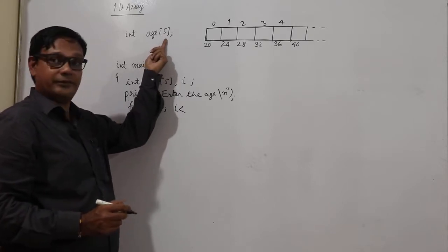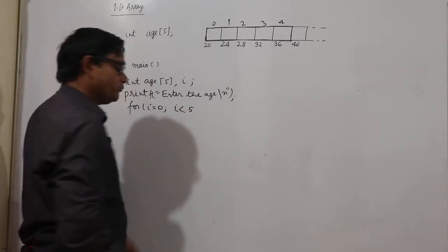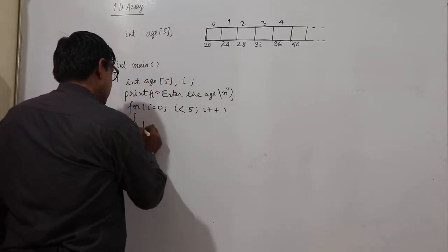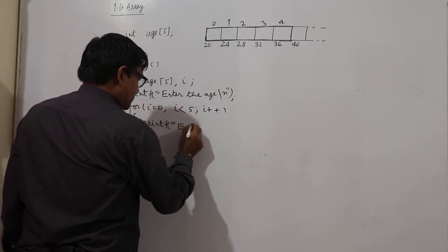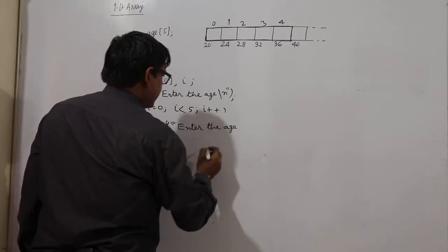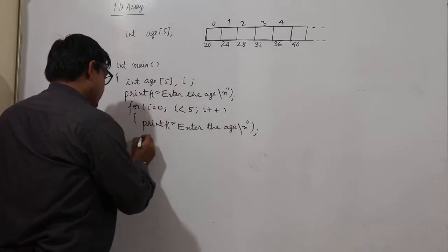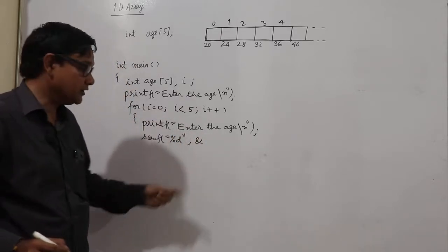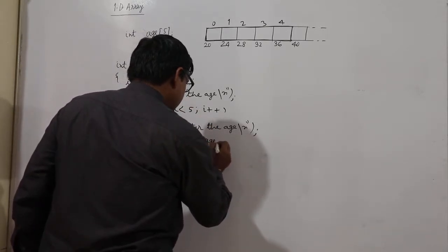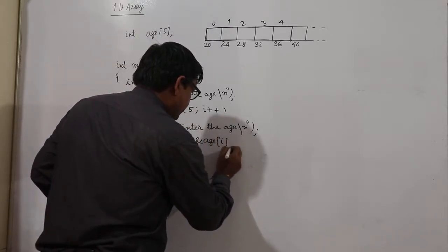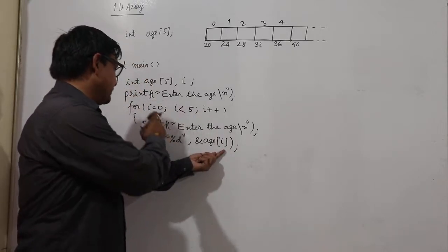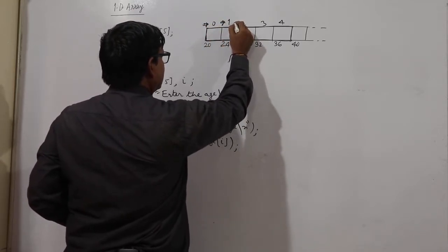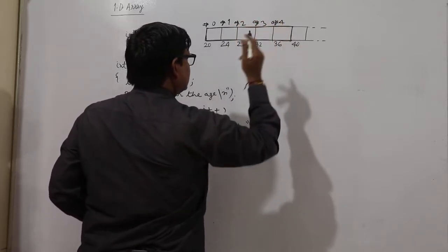For i equal to 0 because index is starting with 0, i less than 5, because here highest index will be 5 minus 1, so it will be less than 5, less than 5 means 4, i plus plus. Printf enter the age, scanf percent d. I was using ampersand sign in scanf. Okay then here age is variable, here age and index value will be used here, i. Ampersand age i. Initially for i is 0 it will be age 0, i can take it age 0, age 1, age 2, age 3, age 4.